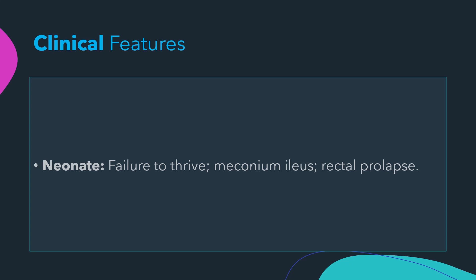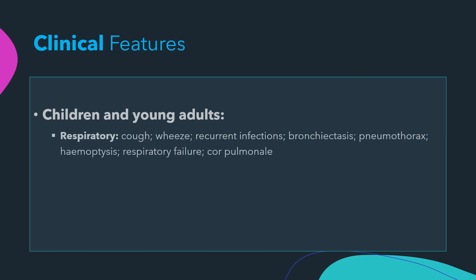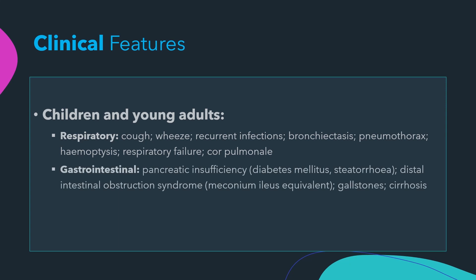In neonates, the disease presents as failure to thrive, meconium ileus, and rectal prolapse. In children and young adults, it may present with respiratory symptoms like cough, wheeze, recurrent infections, bronchiectasis, pneumothorax, hemoptysis, respiratory failure, and cor pulmonale.